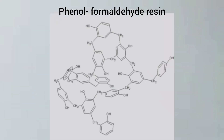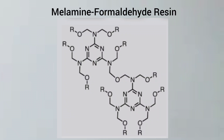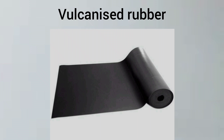Here is the phenol formaldehyde resin as shown in the figure, and urea formaldehyde resin here, and the third one, melamine formaldehyde resin as shown in the figure structure, and finally vulcanized rubber, which we use as tires in our bikes and vehicles.